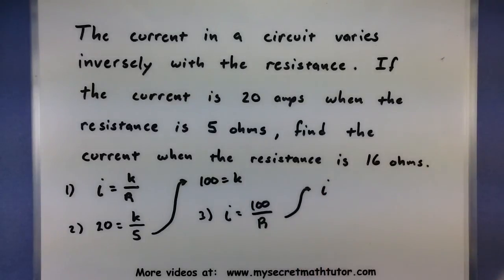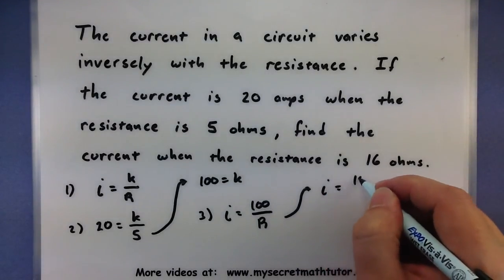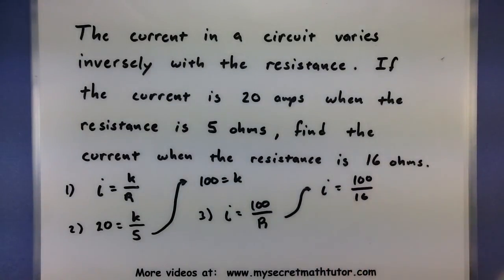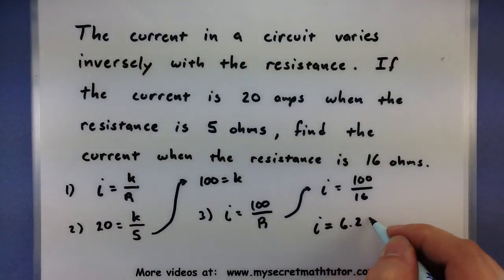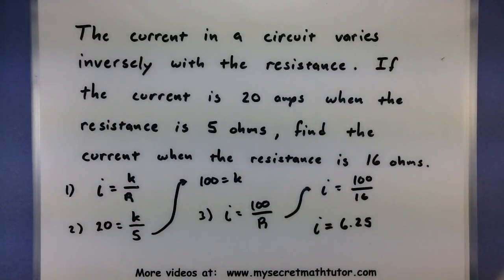So we want to know what the current is, and the resistance is 16. 100 divided by 16 will give us I equals 6.25, and that's our current. So we'd say 6.25 amps.